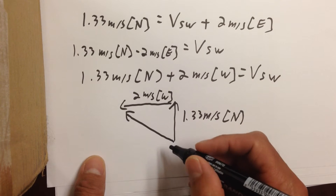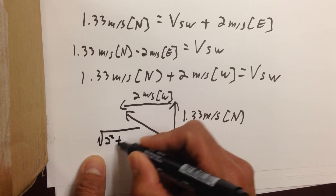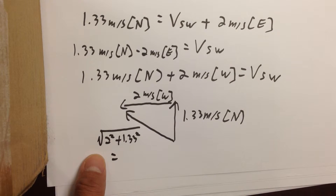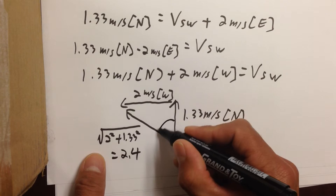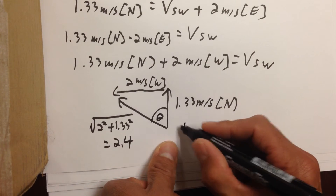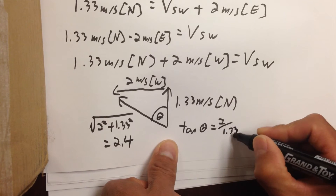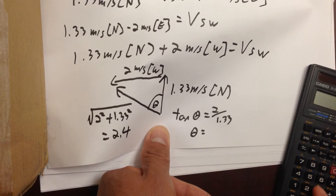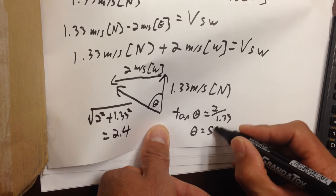To find the magnitude, we use the Pythagorean theorem. The magnitude is the square root of 2 squared plus 1.33 squared, which gives us 2.4 meters per second. For the angle theta, the tangent of theta equals 2 over 1.33. So theta is the inverse tangent, or arctan, of 2 over 1.33, which gives us 56.4 degrees.